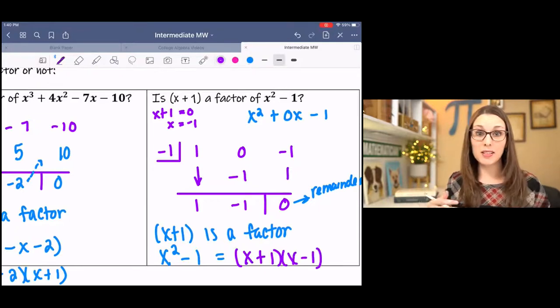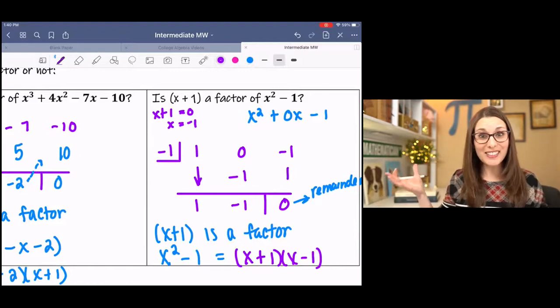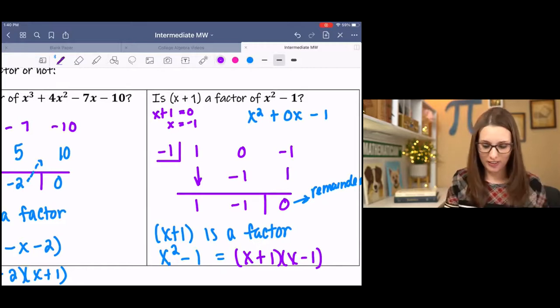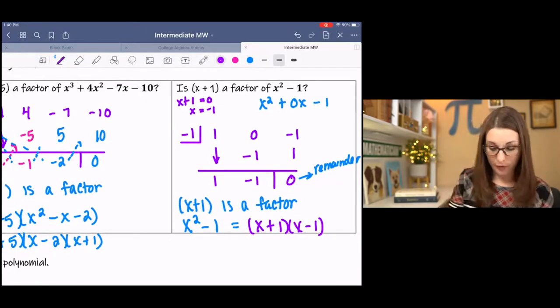So x squared minus 1 factors into x plus 1, x minus 1, which is true. It's a difference of two squares. And if we used our factoring skills, we would get that. Isn't that so neat? So if you have trouble with factoring, this is a different way to factor, kind of. It's more than that, but you can use it.